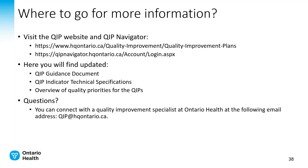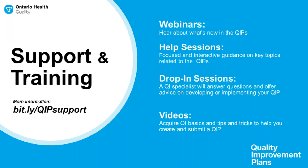You can also go to the QIP website and QIP Navigator to find more information specific to the QIP, including guidance documents, indicator technical specifications, and the overview of quality priorities for the current QIP year. You can also connect with a quality improvement specialist at Ontario Health at the email qip.hqontario.ca. Additional webinars, focused and interactive help sessions on key topics related to QIPs, drop-in sessions with QI specialists to answer specific questions, and more videos on QI basics and tips and tricks to help you create and submit a QIP will also be available.